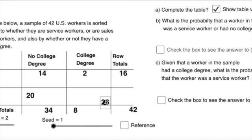I had 2 service workers with a college degree and 8 total people with a college degree, and 2 plus what gets me 8? That would have to be 6. Over here I know that there were 16 total service workers and 42 total workers, and 16 plus 26 gets me 42. Really what we're going to focus on today is just filling in those blank numbers. Can we figure out the blanks?